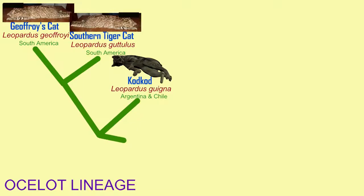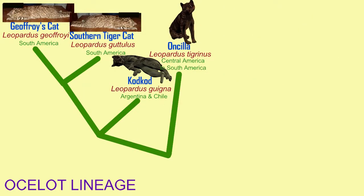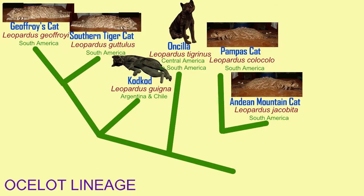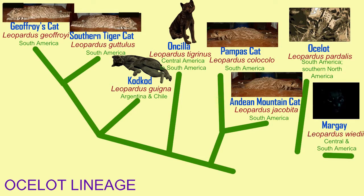The cat genus Leopardus consists of the cats of the Ocelot lineage. These small cats are native to South America, with a few also existing in Central America. They form a lineage more closely related to other cats of this genus than to any cat outside this genus.